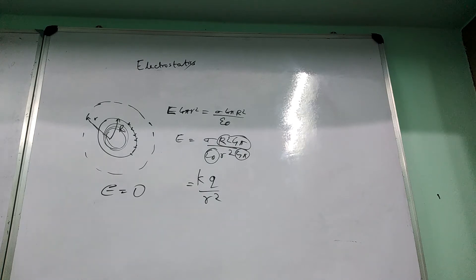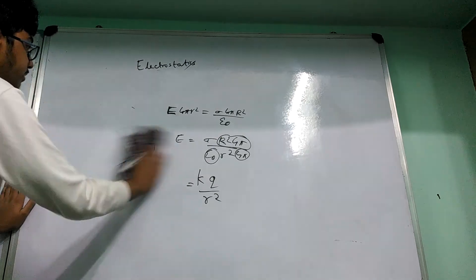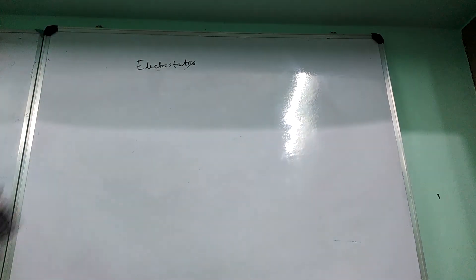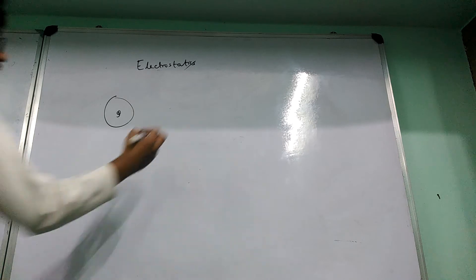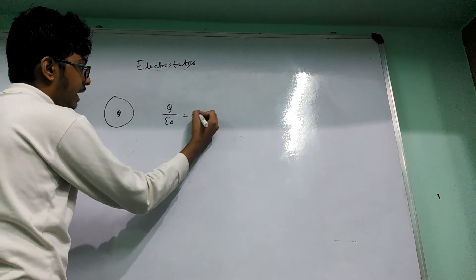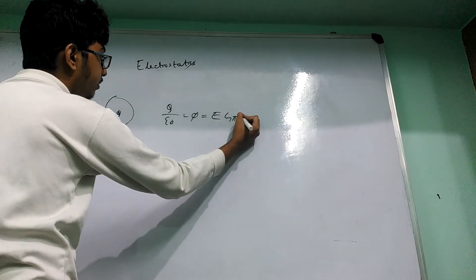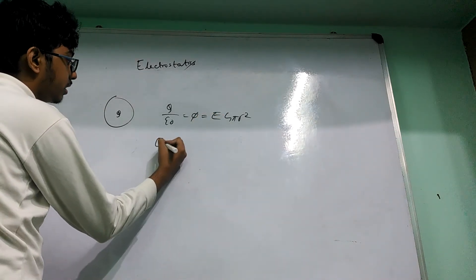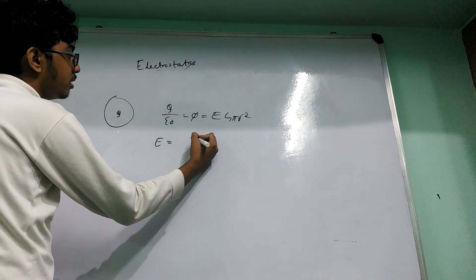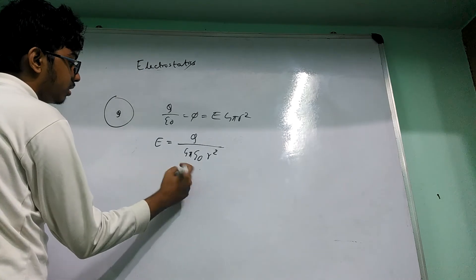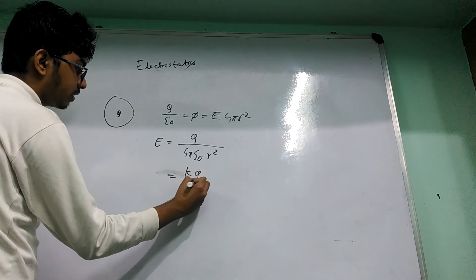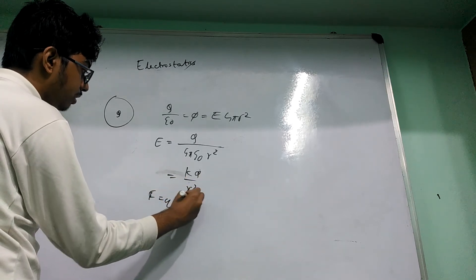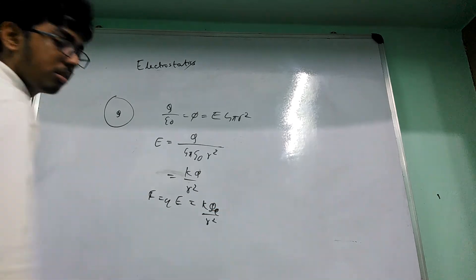You can actually derive Coulomb's law from Gauss's law. For a hollow sphere enclosing charge Q, Gauss's law gives E·4πR² = Q/ε₀, so E = Q/(4πε₀R²) = KQ/R². Then F = QE gives F = KQ₁Q₂/R², which is Coulomb's law. So these two laws are consistent with each other.